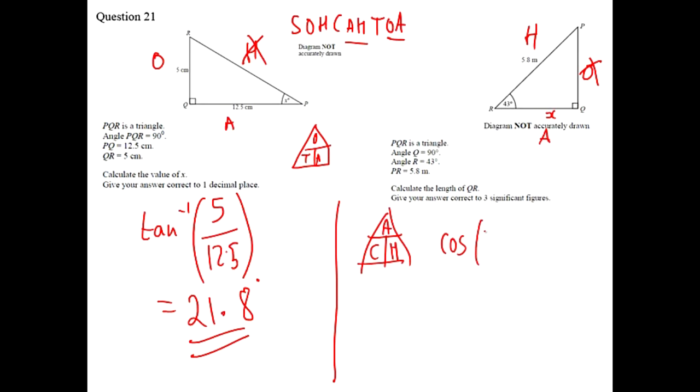So we need to do cos of 43 and multiply that by the hypotenuse 5.8. You must make sure you put these brackets on here. And if you type that into a calculator you'll get 4.24 when you round it to 3 significant figures like the question asked us to do.